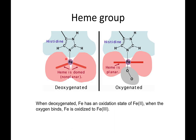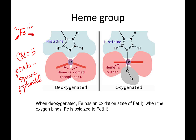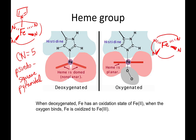Now let's talk about geometry. The deoxygenated heme group has a coordination number of five and a pseudo-square pyramidal geometry. The nitrogens from the heme group form a plane that is not quite planar. When oxygenated, the coordination number becomes six and the geometry becomes octahedral.